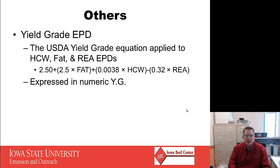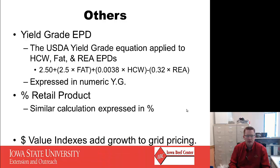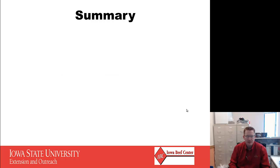There are a few other traits. Yield grade EPD might surprise quite a few of you — it's nothing more than the math problem we use to assess yield grade, applied to the EPDs in the equation: 2.5 plus 2.5 times the fat EPD, minus 0.0038 times the hot carcass weight EPD, minus 0.32 times your ribeye area EPD. So it is expressed as a numeric yield grade. Percent retail product is another one, with a very similar calculation but expressed in percentage points, used to assess the ability of a carcass to yield. Dollar value indexes will add growth into grid pricing, and those weightings will adjust over time as market conditions change.